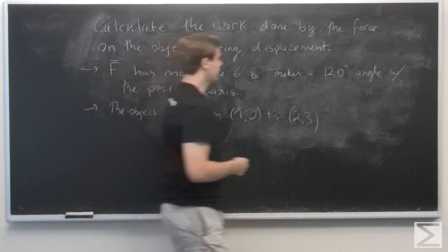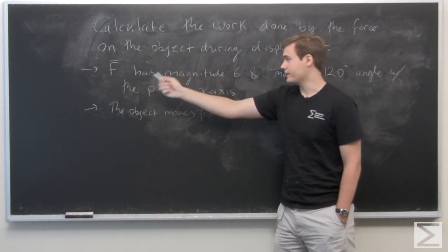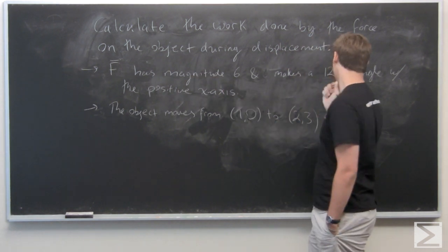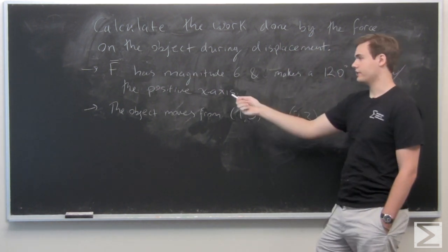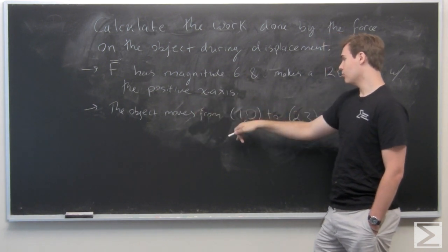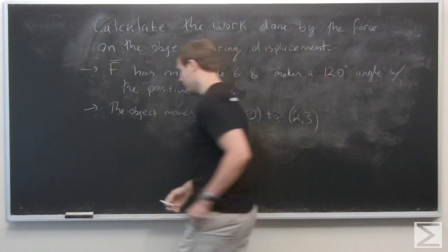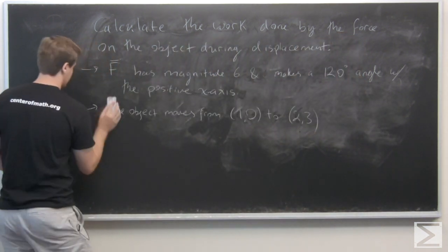Here, we want to calculate the work done by this constant force where all we know about F is that it has magnitude 6 and makes a 120 degree angle with the positive x-axis. And we know that the object moves from (1,0) to (2,3). We want to simplify this a little bit to make it easier.